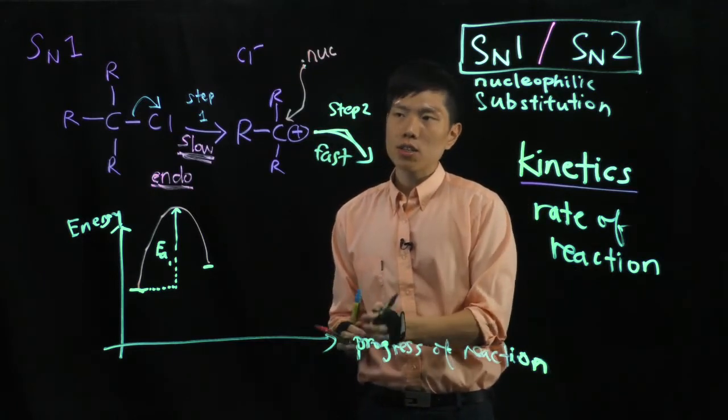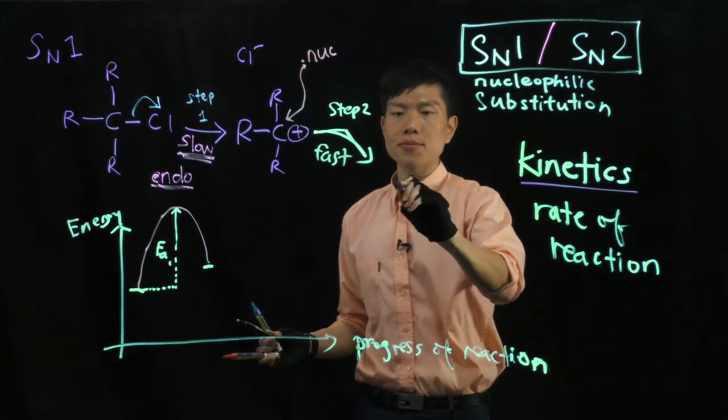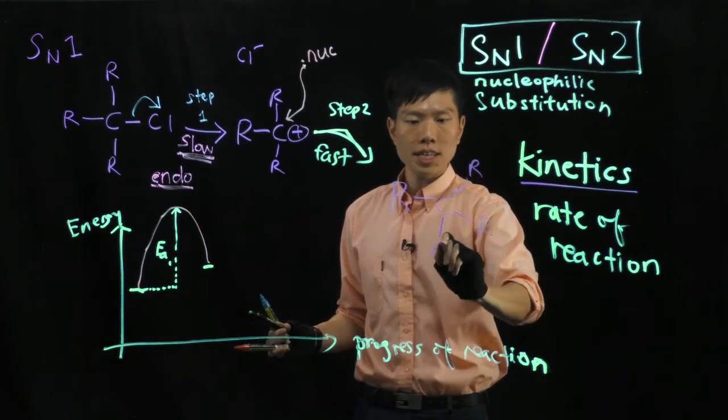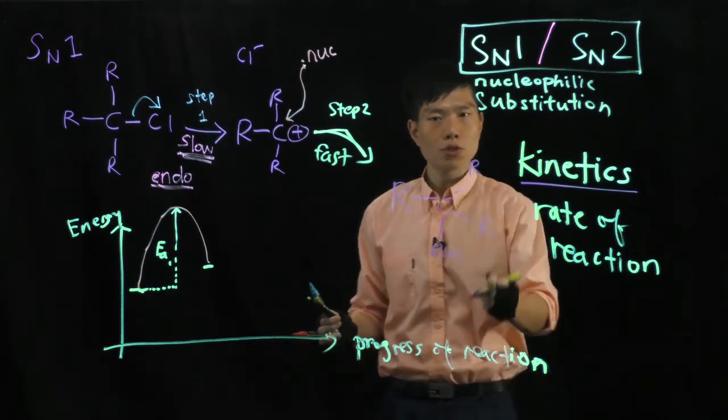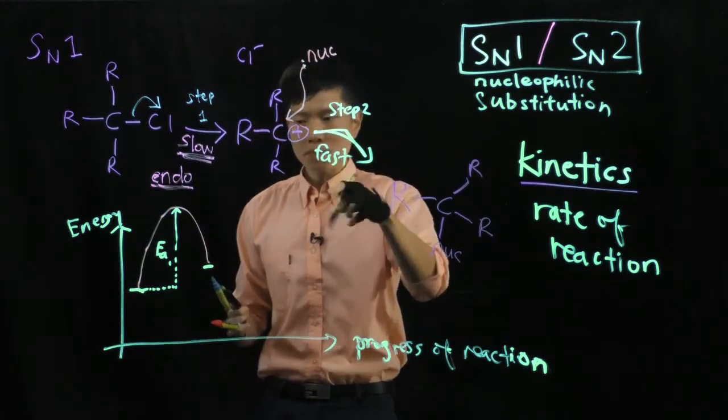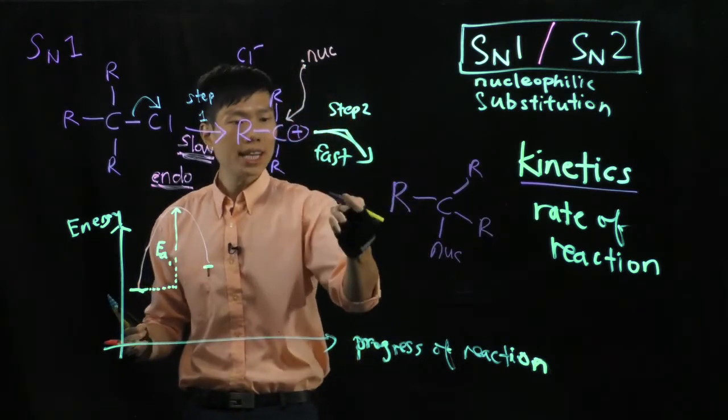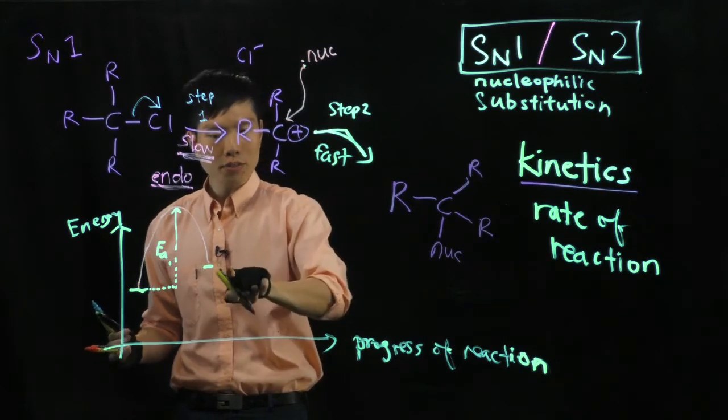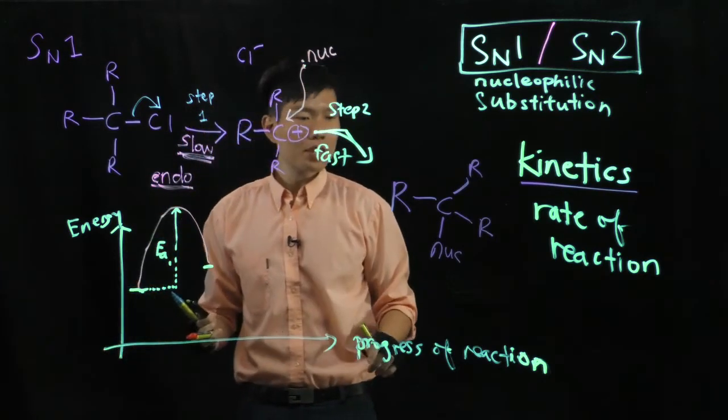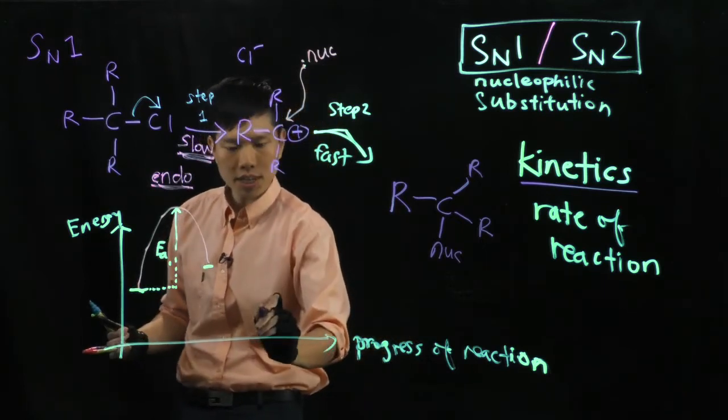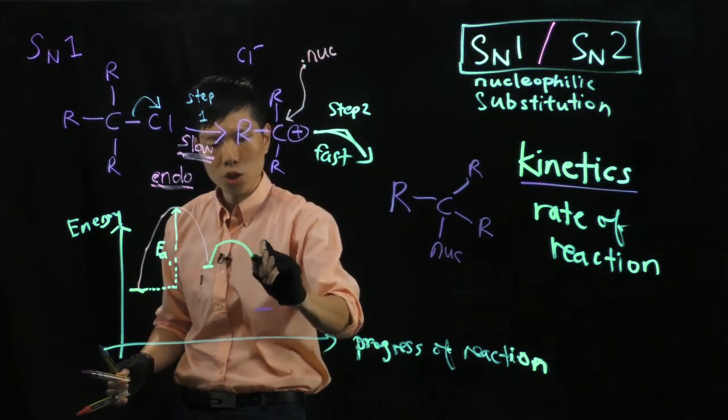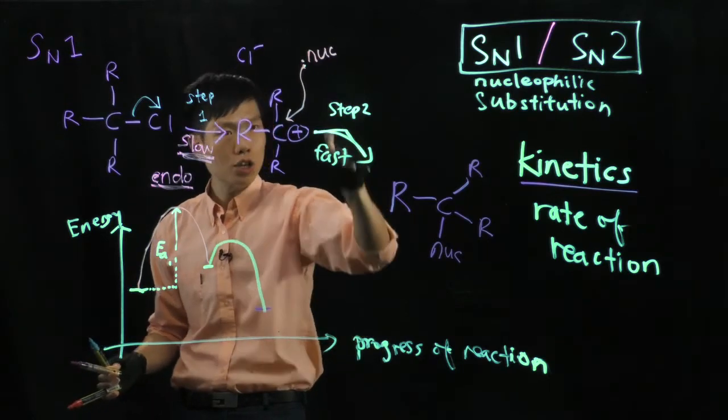Now, eventually, you get your product here, with the incoming group, nucleophile, joined. Okay. So, this step is fast, meaning it will have a much lower activation energy. And the product here should be lower than before, because here the carbon has not achieved the noble gas configuration. Right now, let's make it exothermic.